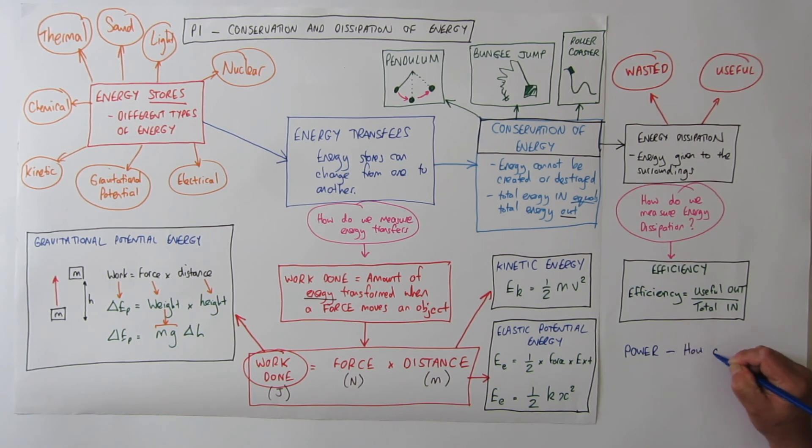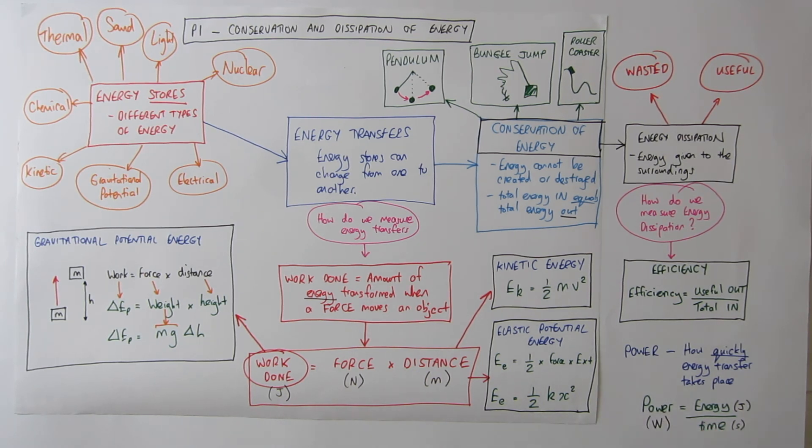Another way we can measure energy transfers is by something called power. Now power is how quickly an energy transfer takes place. And again we have an equation which is power equals energy over time. Don't forget the units. Energy is measured in joules. Time is in seconds. And of course power is in watts.